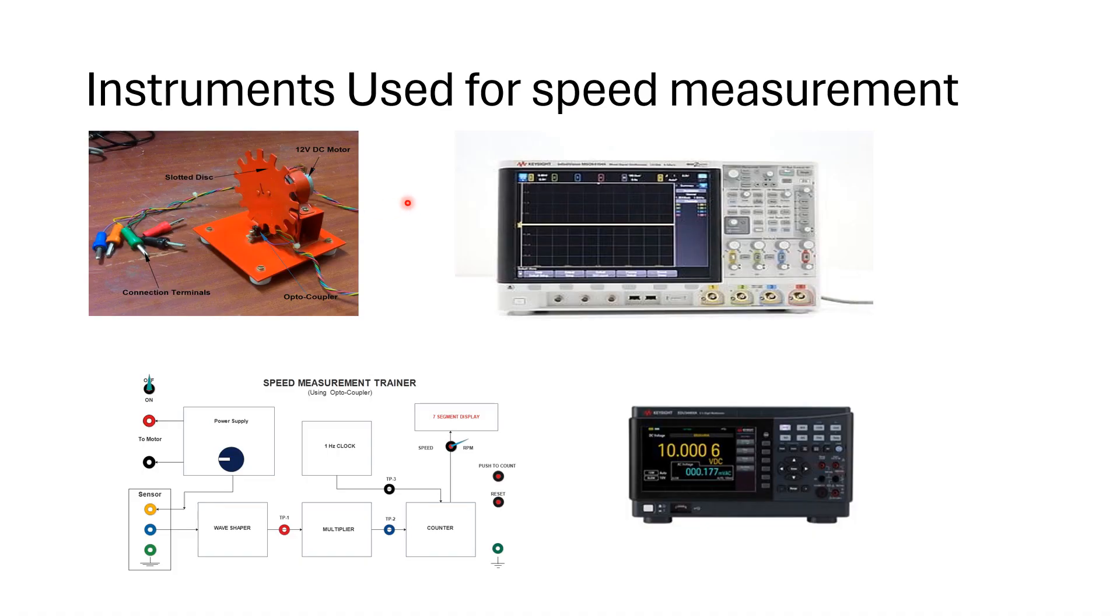Here are some instruments used for speed measurement experiment. In this experiment we will use this 15-slotted disc which is mounted on the DC motor. And this is the optocoupler. This black instrument is optocoupler.